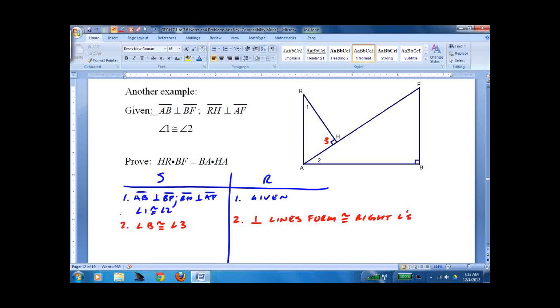Alright. So I've got two angles. Here's my one angle. Here's my second angle. So I can say angle angle similarity. And I have to be very careful. AHR. And I'm going to do it differently. I'm going to write HRA. You might see why in a second. You might not. I'm going to write HRBAF. That's angle angle.